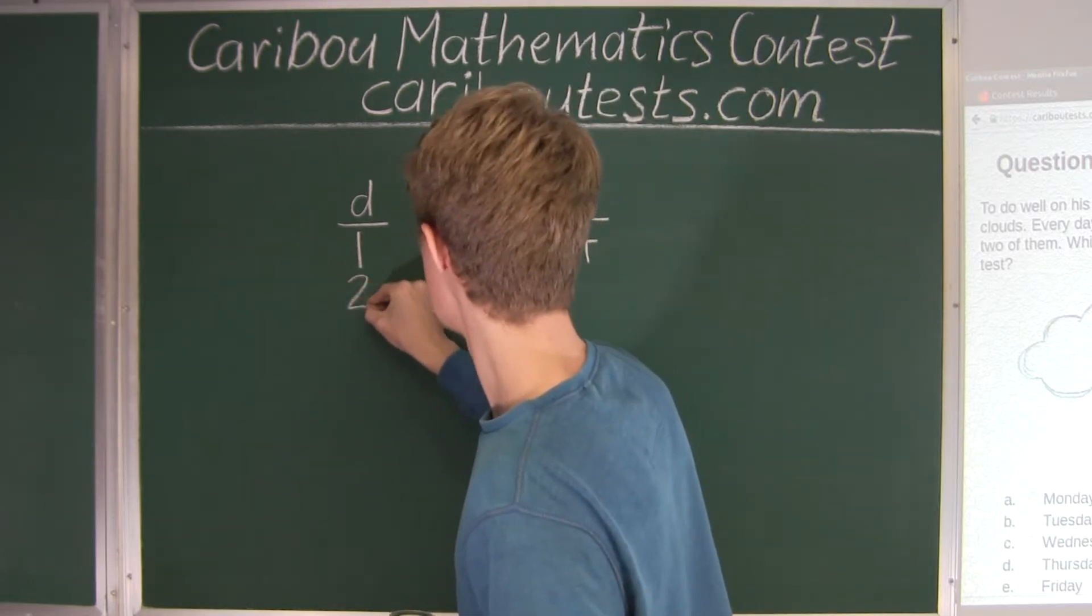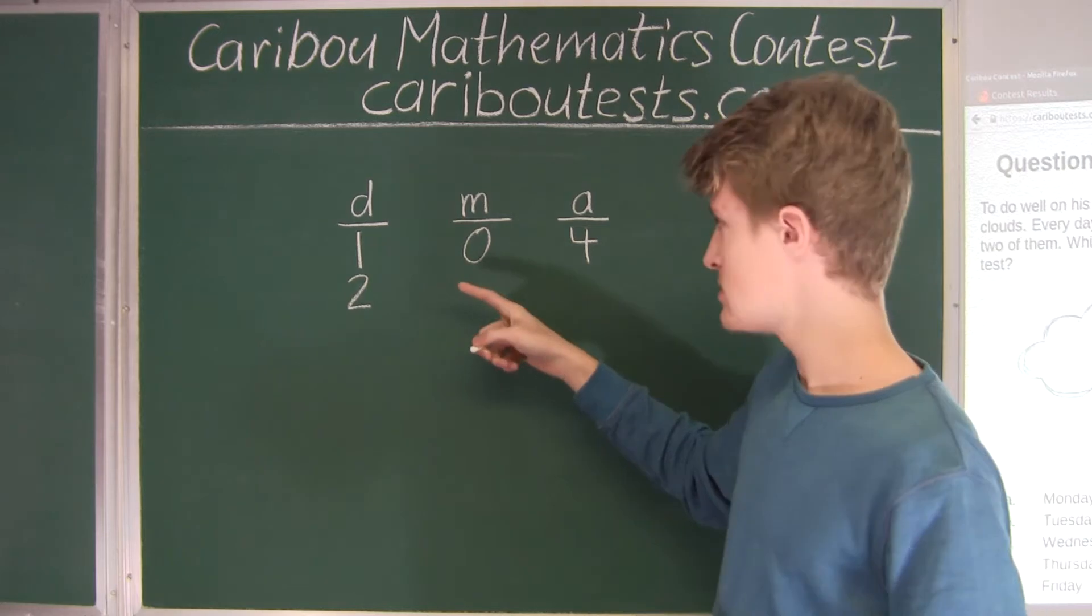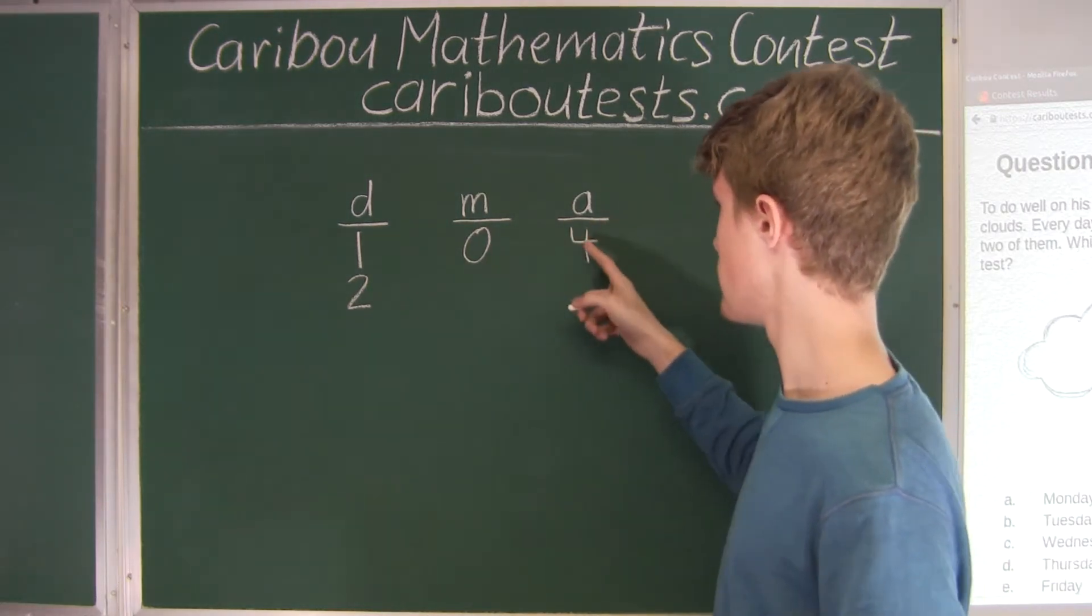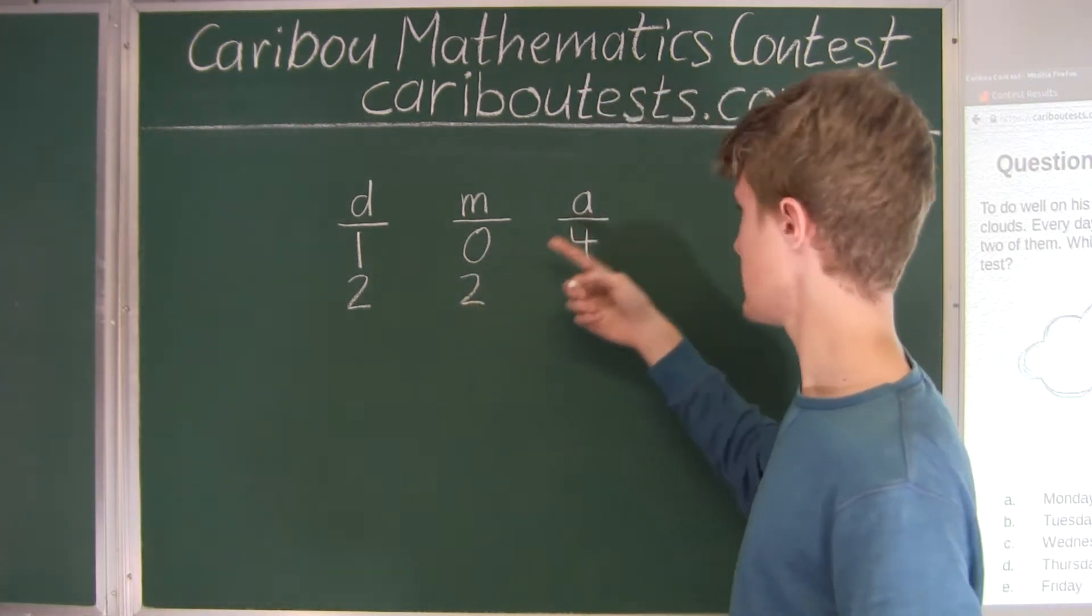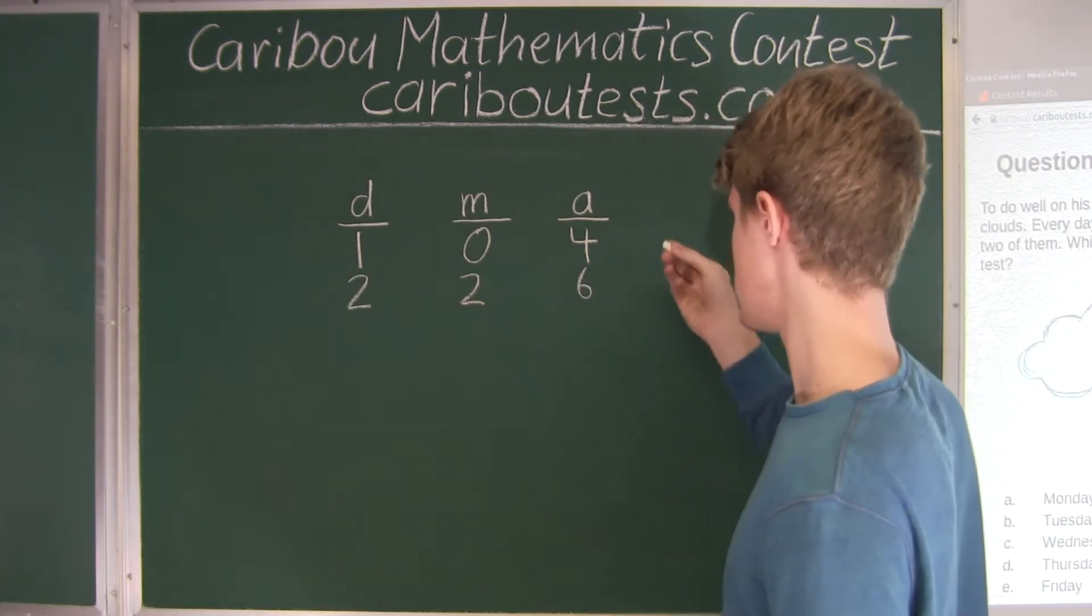Alright, so that's for day 1, now day 2. Well, we know that as soon as he wakes up, he forgot 2 from the night. So 4 minus 2 is 2. This is before he learns anything, and then by the afternoon when he learns 4 more, then he has 6.